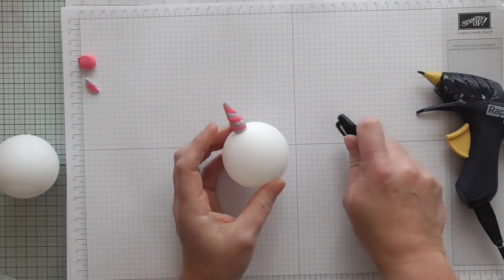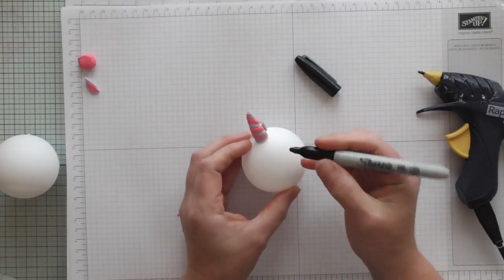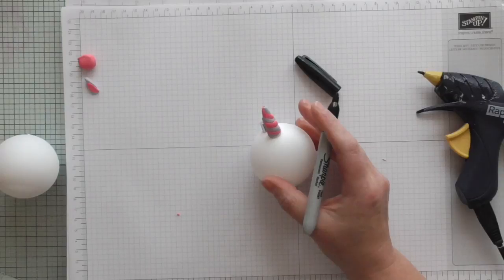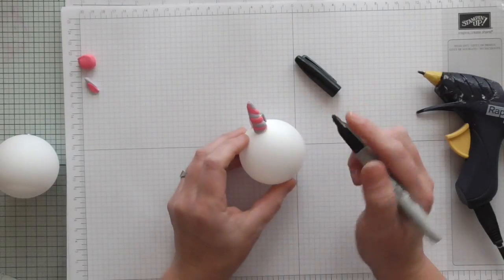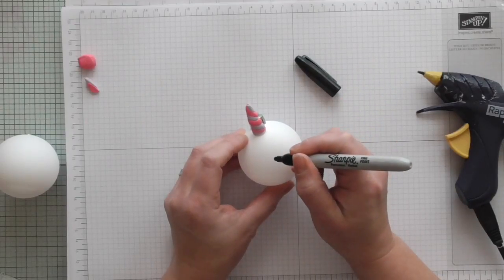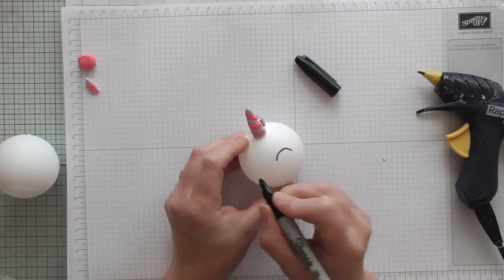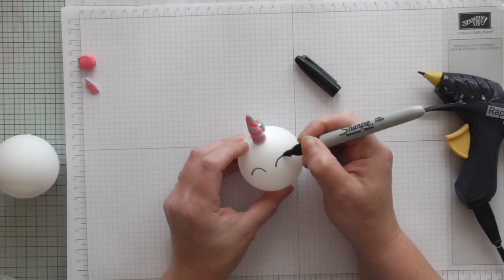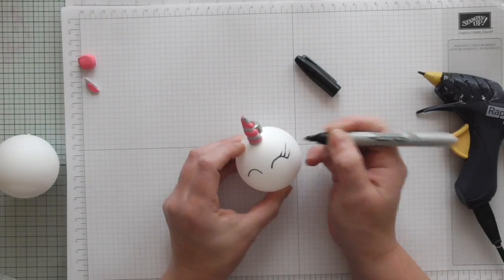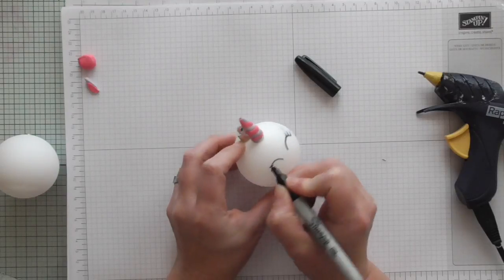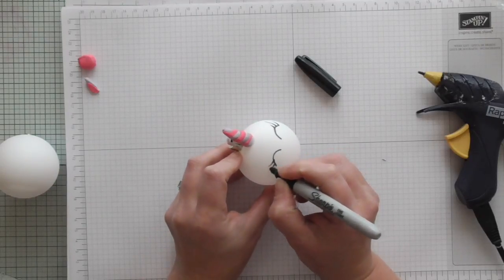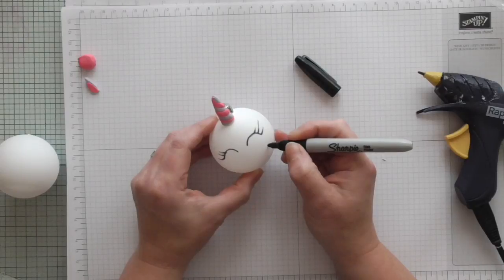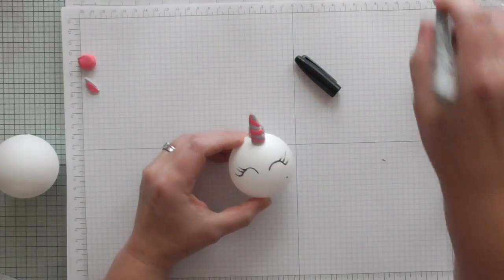Right, so what I need to do now is I need to first of all draw my eyes. So I did practice on a piece of paper earlier. I'm not a massive artist. So you do one that way and then you do one that way. Then just do one, two, three flicks for the eyelashes. We've got some cute eyes and I'm going to give it a little beauty spot there because I just think that's cute.